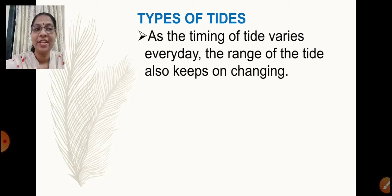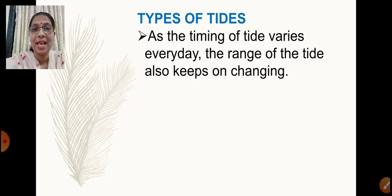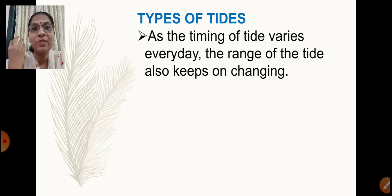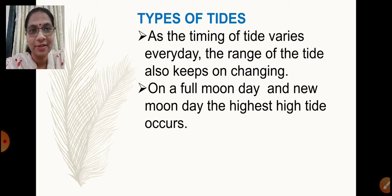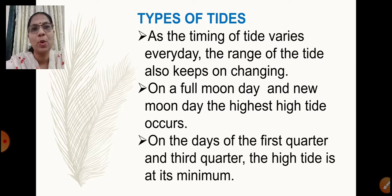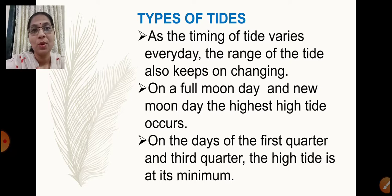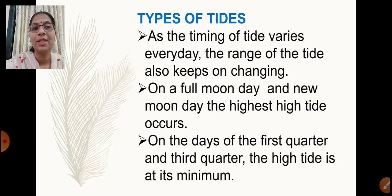As the timing of the tide varies every day, the range of the tide also keeps on changing. If it is high tide at nine o'clock in the morning, the second high tide will be after 12 hours 25 minutes, and then again after another 12 hours 25 minutes. Within a day you will have a cycle of high tide and low tide. The range — meaning with what velocity the tide occurs — also keeps changing. On a full moon day and new moon day the highest high tide occurs, and on the days of the first quarter and third quarter the high tide is at its minimum.